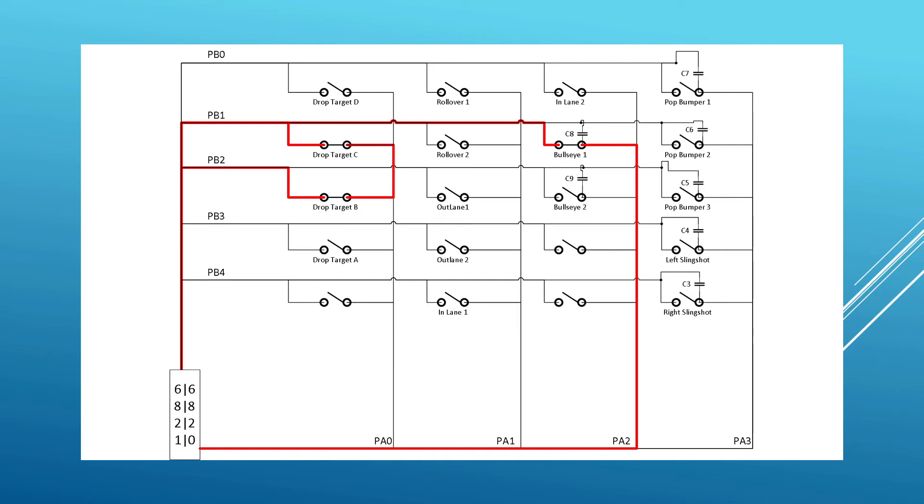The PIA would see both PB1 and PB2 pulse in combination with its output on PA2, which would make the PIA think that both bullseye 1 and bullseye 2 had been hit, as those are the switches at the intersection of PA2 and PB1 and 2.